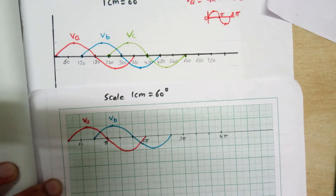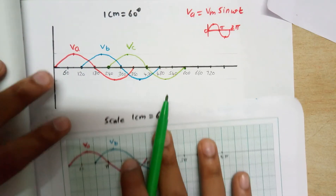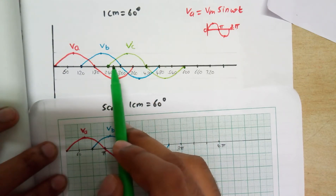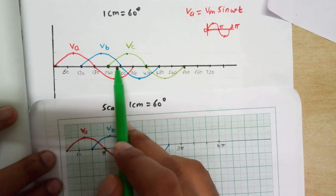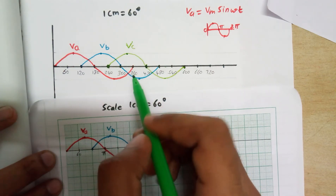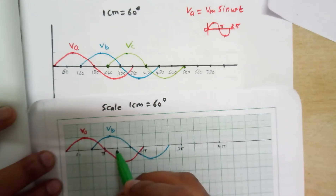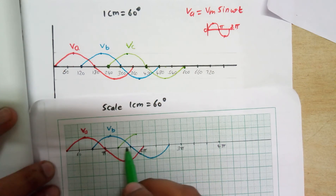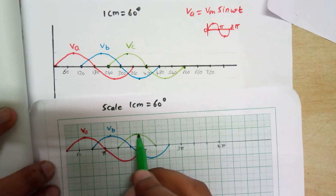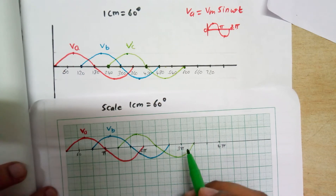And this will be our bottom part of Vb. Now Vc will start from 240 degrees, because Vc equals Vm sin(omega t minus 240). It will start from 240 and have a peak point after 1.5 cm. The ending point will be after 180 degrees — conducting for 180 degrees and ending at 420 degrees. The bottom part follows similarly. This is our Vc.